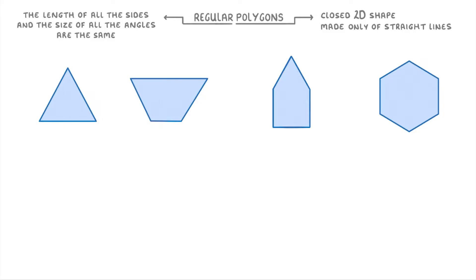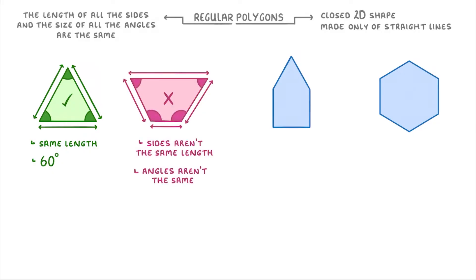So this equilateral triangle on the left would count as a regular polygon because these three sides are all the same length and these three angles are all 60 degrees. However, this second shape isn't a regular polygon because its sides aren't all the same length and its angles aren't the same size. It is still a polygon though.